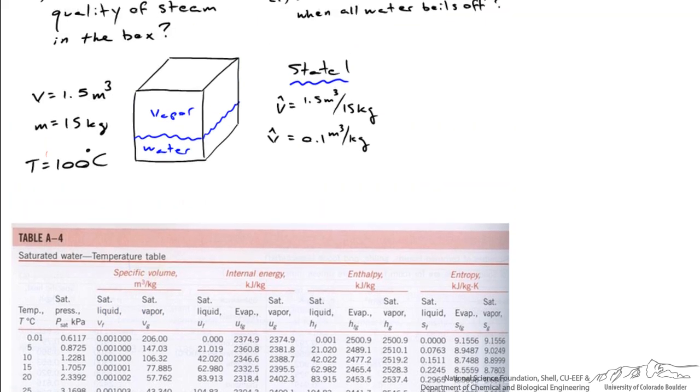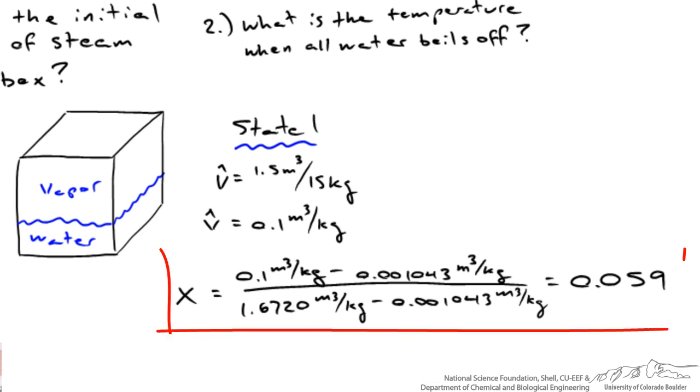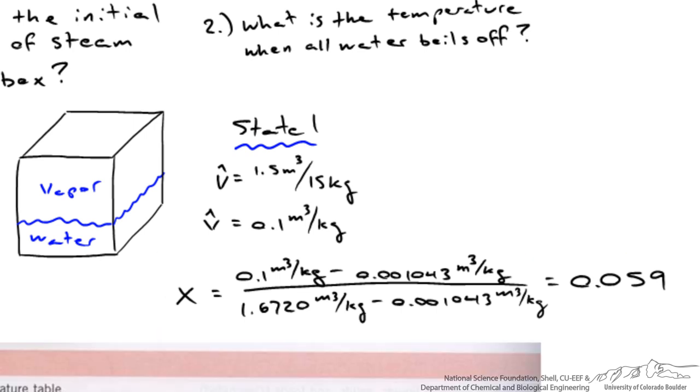I can use that information now to solve my problem. The easiest way to do it is to use this ratio of the difference in specific volumes. This is the specific volume of the system, and it's the difference between this and the specific volume of the liquid, divided by the specific volume of pure vapor and the difference between that and the specific volume of the liquid. One thing to note is that if my specific volume was equal to that of the vapor, then the numerator and denominator would be equal and the quality would be 1. If I had a specific volume equal to the liquid, I would have a quality of 0. In this case I run the calculations and I've got a quality of about 0.059 or about 6%. So 6% of the mass within this box is comprised of vapor.